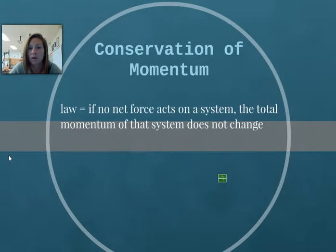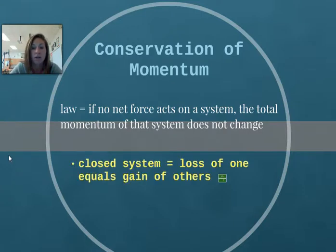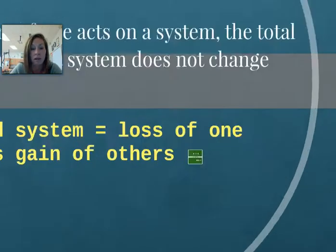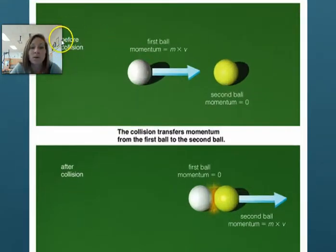Alright. There is a law of conservation of momentum that states if no net force acts on a system, then the total momentum of that system will not change. If the system is closed, meaning there are no outside forces acting on it, then the loss of one is going to equal the gain of others, like in the game of pool. So before the collision, you have the momentum of the first ball, which they're just designating here with the equation. But the second ball is at rest, so its momentum is zero if the ball is at rest.